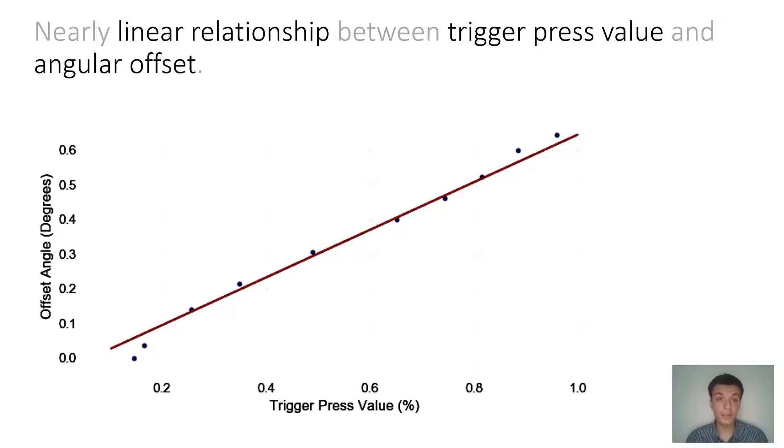We also found a nearly linear relationship between the trigger press value, so how far the trigger is pressed in, and the angular offset or the Heisenberg magnitude. So the further the trigger was pressed, the more the ray or the selection ray got displaced.